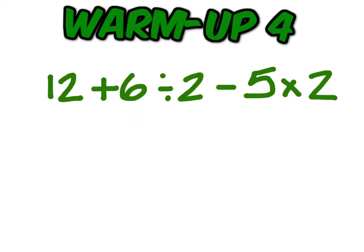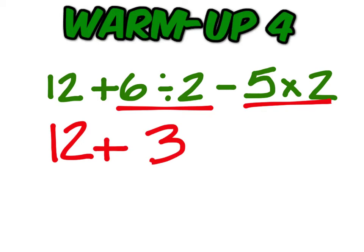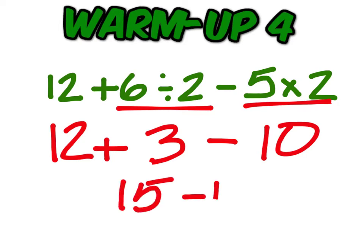Number 4, show me this one. Multiplication and division come before addition and subtraction. So you have 6 divided by 2 and 5 times 2 to do first. 6 divided by 2 is 3 and 5 times 2 is 10. 12 plus 3 is 15 minus 10 is 5.